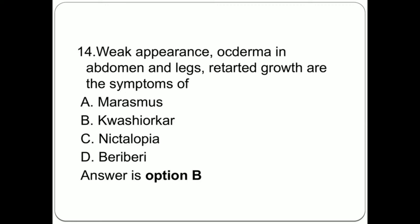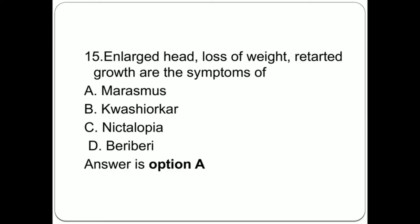Question 14: Weak appearance, oedema in abdomen and legs, retarded growth are the symptoms of: A. Marasmus, B. Kwashiorkar, C. Nyctalopia, D. Beriberi. Answer is option B, Kwashiorkar.